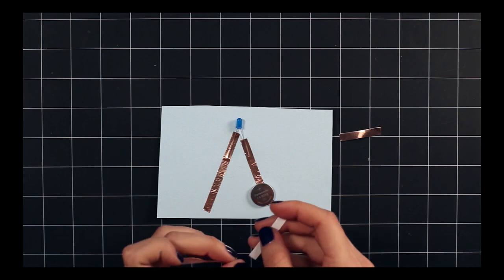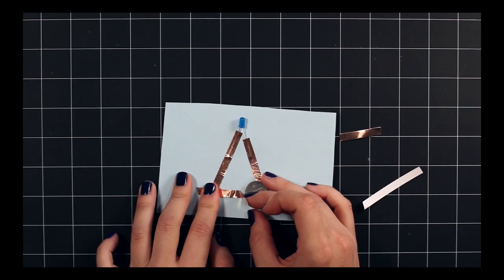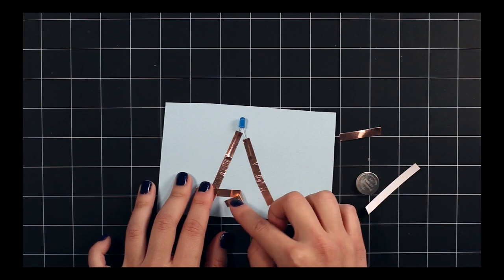Peel your third piece of copper tape. Connect it to one of your legs and press it almost all the way down.